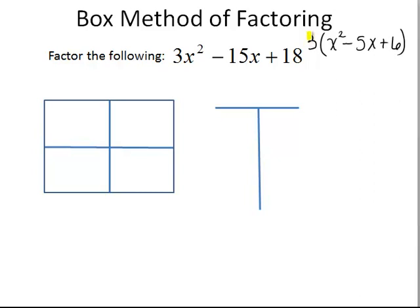Now, the only thing to remember is that at the end, we're going to need to rewrite this 3 as part of our answer. So, now we have a new trinomial to look at, which is x squared minus 5x plus 6. So, what we're going to do is take that and apply our box method for factoring.